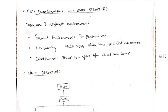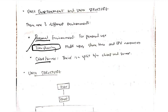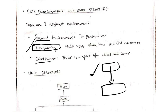What is the Unix environment and Unix architecture? There are three types of environments. First is for personal use. Second is time sharing — time sharing means there are multiple users, each of them takes some amount of CPU time and shares it for usage. Third is client-server — there will be a client and a server, and this type of environment is known as a client-server environment.